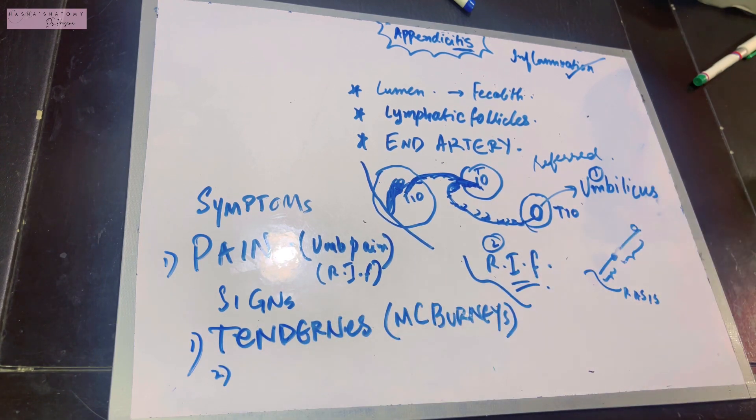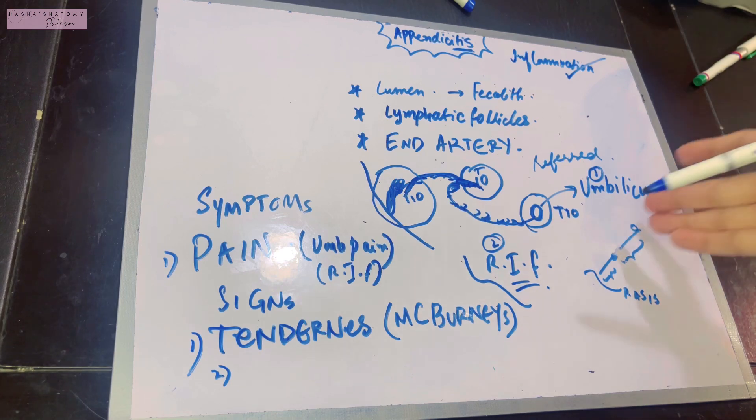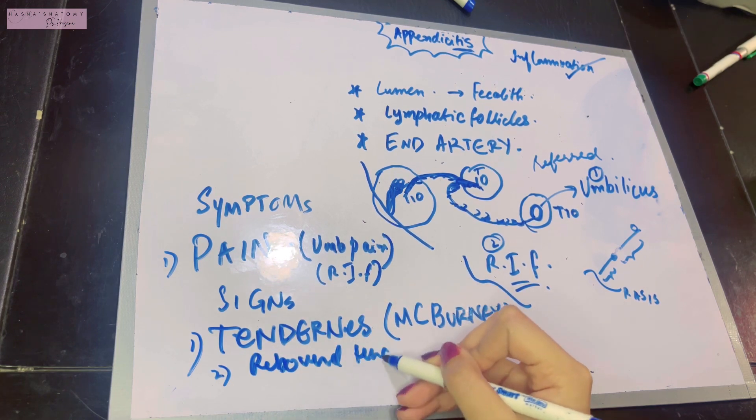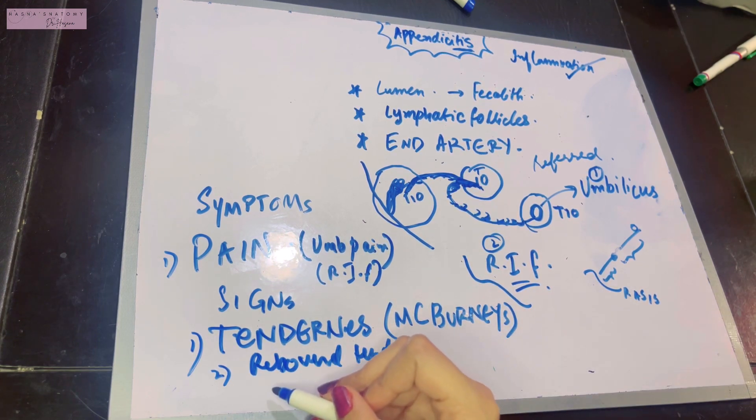The second sign is when you remove your hand, the removal of your palpatory pressure will cause pain once again. This is known as rebound tenderness. This is another sign you'll observe in this patient.